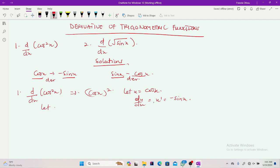Let cos²x be equal to y. So y equals cos²x. The question is saying that we should differentiate with respect to x.